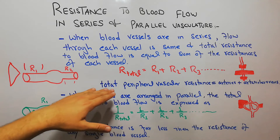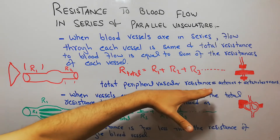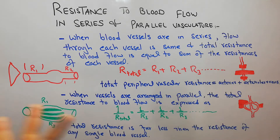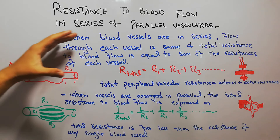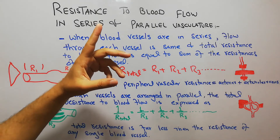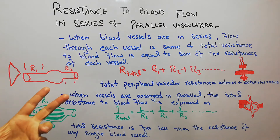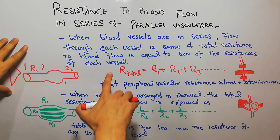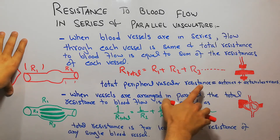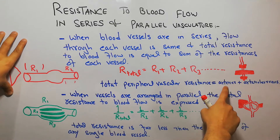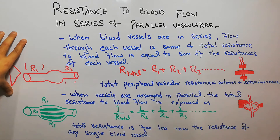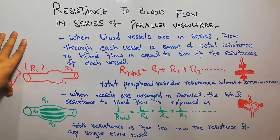The total peripheral vascular resistance is equal to the resistance of the arteries, the arterioles, the veins, and so on. In the human body, when the heart pumps blood, it goes through the aorta into the larger arteries, then arterioles, and finally the veins. To calculate total peripheral vascular resistance, you add the resistance of the arteries and the resistance of the veins — that is resistance in series.